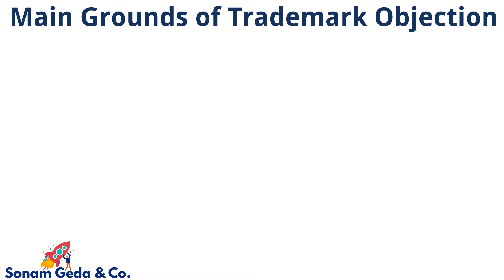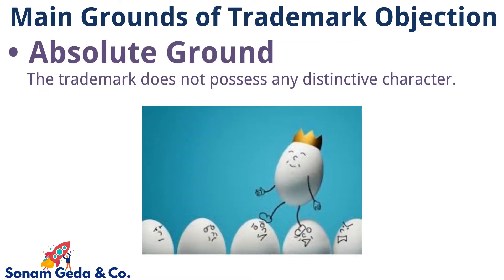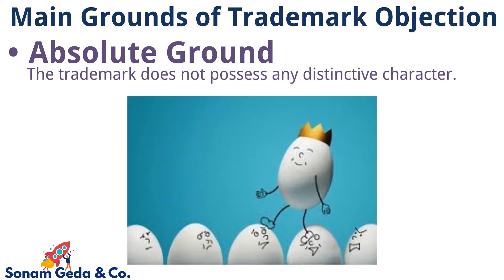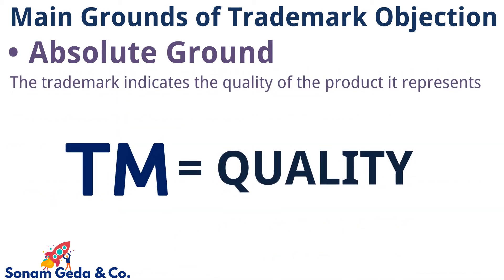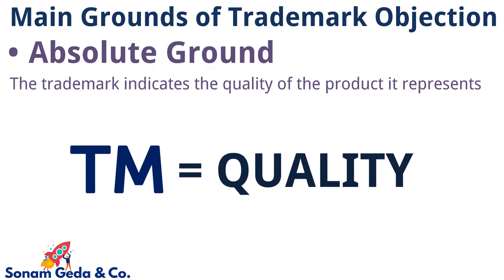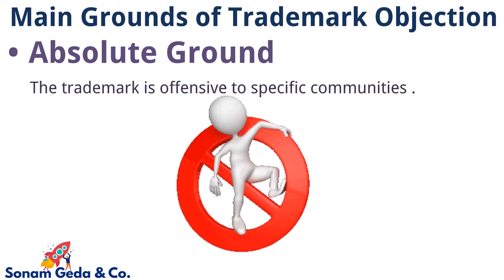Absolute Ground: The trademark does not possess any distinctive character. The trademark indicates the quality of the product it represents. The trademark is offensive to specific communities.